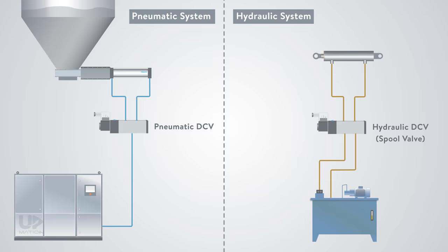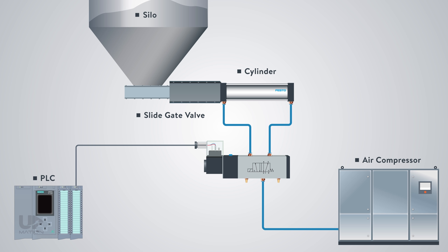Let's start with this simple pneumatic circuitry and then see which parts a directional control valve has. The main power of this pneumatic system is coming from the compressed air that is supplied by a compressor. The directional control valve is directing the flow of the compressed air in two different directions to open and close this slide gate valve using its actuator which is a double-acting cylinder.